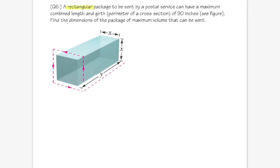Here we have a rectangular package, and if you want to send this via the postal service, you must have a maximum combined length and girth. The girth is the perimeter if you go around the cross section, which is this part right here. We will say the cross section is a square, and altogether the maximum combined length and girth has to be 90 inches. We are going to find the dimensions of the package that will give us the maximum volume.